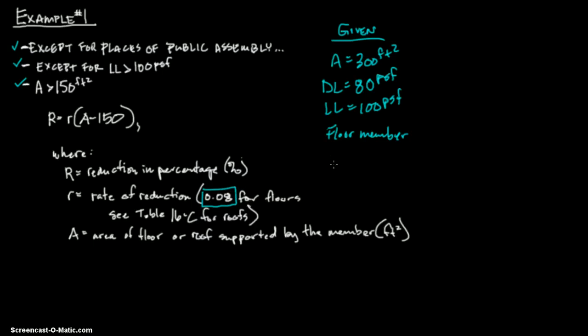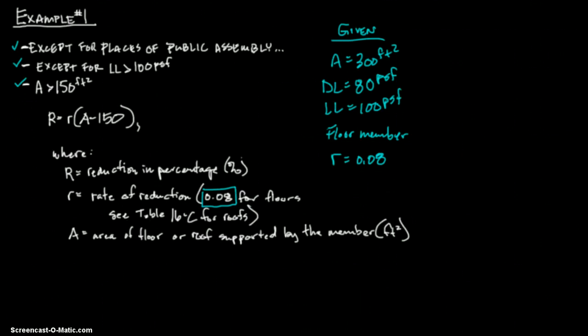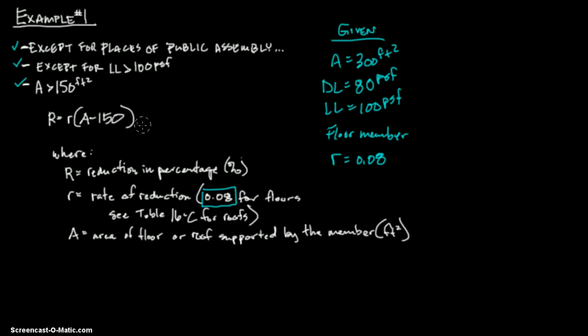We're going to use this right here as opposed to going to table 16-C for roofs. So we know that r equals 0.08 given right here, and then A equals the area of the floor, so your distributed area.